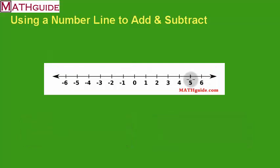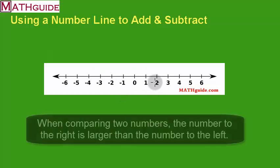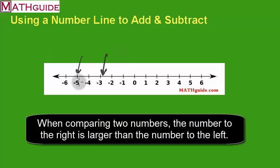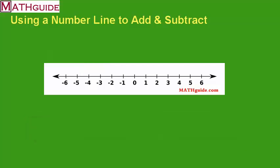We know that five is bigger than three, and three is bigger than one, and one is bigger than negative two. So if you want to compare two numbers, you look at them on a number line — whichever number is further to the right is larger than the number that's further to the left. So if we compare negative three and negative five, negative three is further to the right, so it must be larger than negative five.